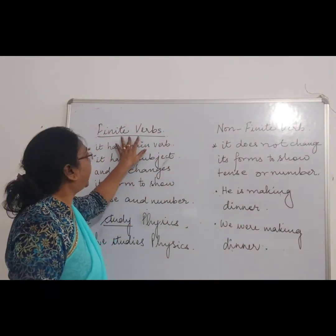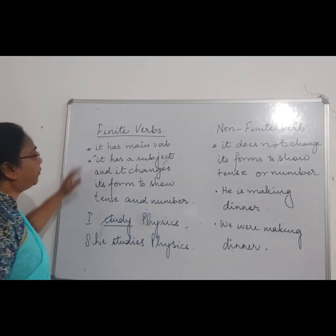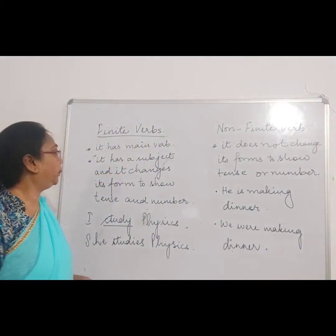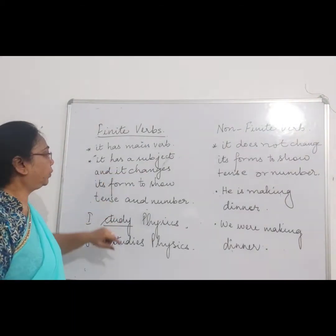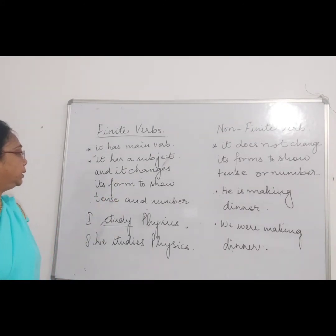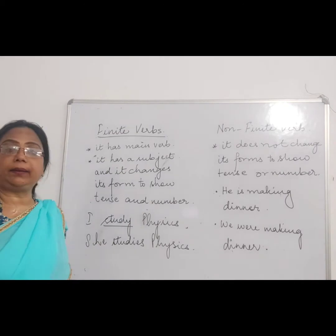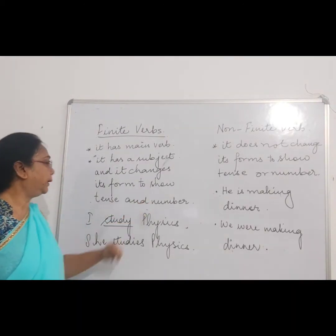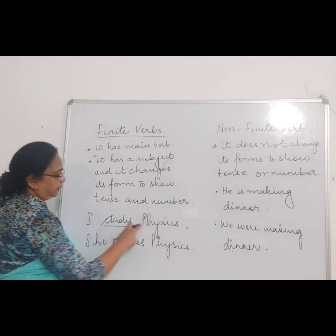Next we will see finite verb and non-finite verb. In the finite verb, a sentence has a main verb; it also has a subject. And it can change its form to show the tenses and the number. For example: I studied physics.